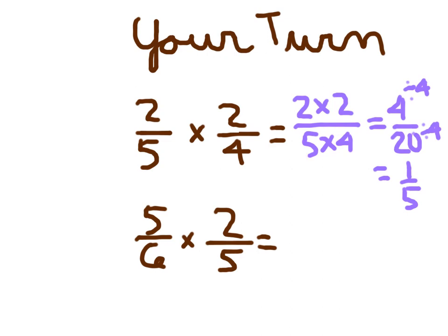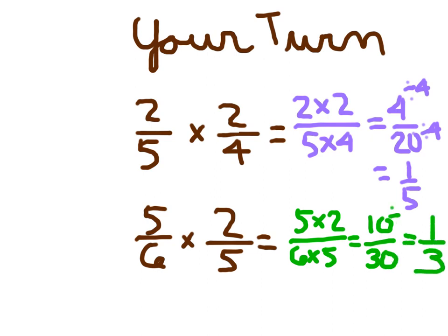For 5 sixths times 2 fifths, we multiply the numerators together. 5 times 2. And we multiply the denominators together. 6 times 5. 5 times 2 is 10. 6 times 5 is 30. 10 thirtieths, I recognize that as being 1 third. Because I could divide the numerator and denominator both by 10.